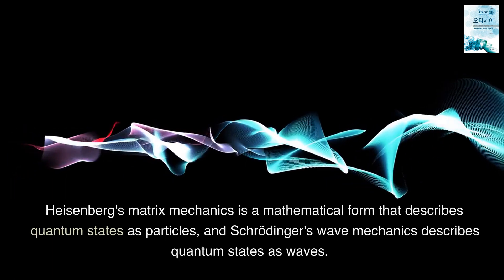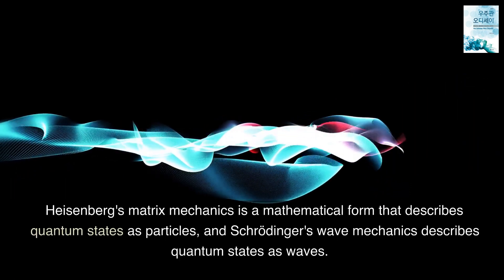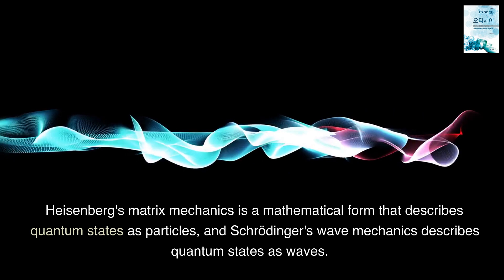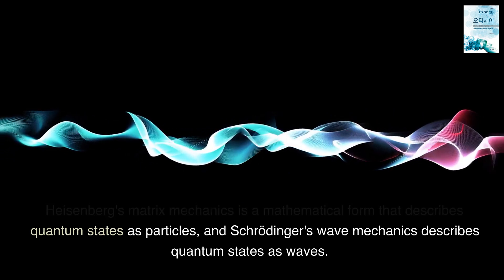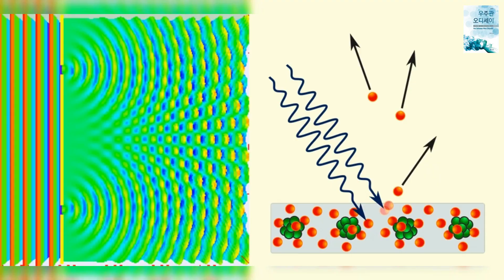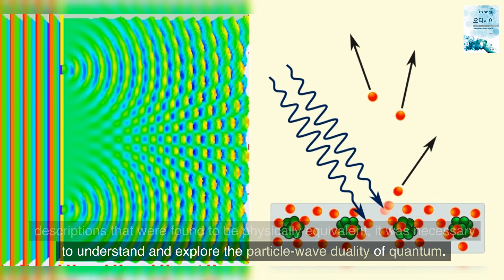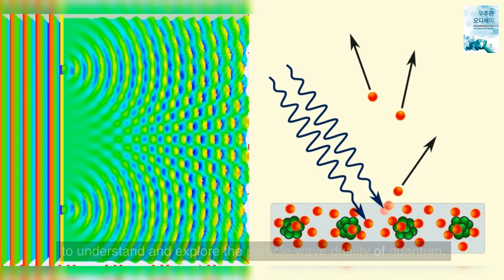Heisenberg's matrix mechanics is a mathematical form that describes quantum states as particles, and Schrödinger's wave mechanics describes quantum states as waves. Bohr thought that in order to reconcile these two mathematical descriptions — found to be physically equivalent — it was necessary to understand and explore the particle-wave duality of quantum.